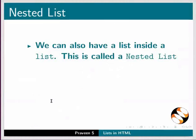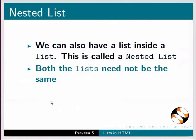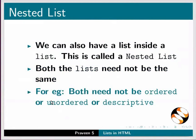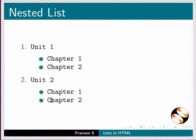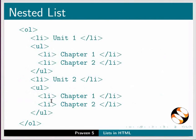We can also have a list inside a list — this is called a nested list. Both the lists need not be the same type; for example, both need not be ordered, unordered, or descriptive. Here is an example of a nested list. Observe the format in which the list is arranged. Let us look at the code for this example. Pause the video and try this on your own.